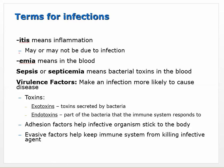Some terms for infections: 'itis' means inflammation, which may or may not be due to an infection - for example, tendinitis from playing sports. 'Emia' with an E means it takes place in the blood - so septicemia is sepsis taking place in the blood. Anytime you see that suffix 'emia,' it's associated with the blood.